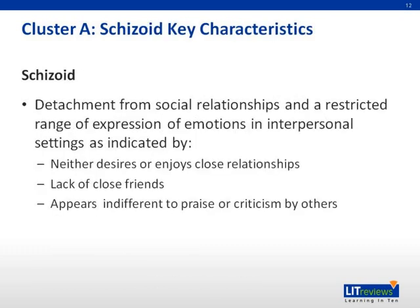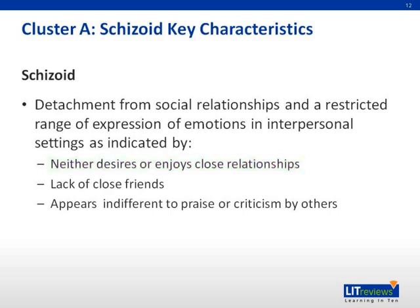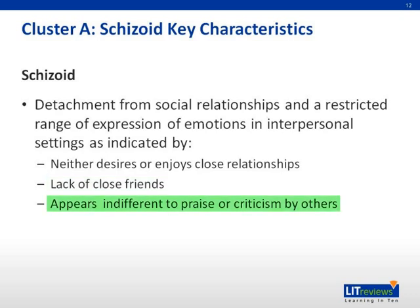The key characteristics of schizoid personality disorder include detachment from social relationships and a restricted range of expression of emotions, typically in interpersonal settings. They typically don't desire nor enjoy close relationships, including being part of a family. They almost always choose solitary activities, have little if any interest in sexual experiences with another person, take pleasure in very few activities, lack close friends other than first-degree relatives, appear indifferent to praise or criticism, and typically show emotional coldness, detachment, or flattened affectivity.